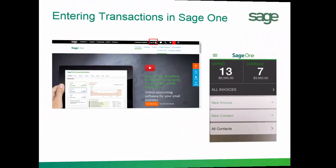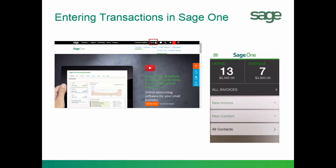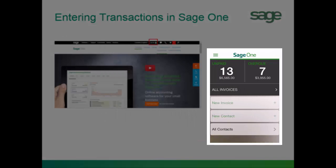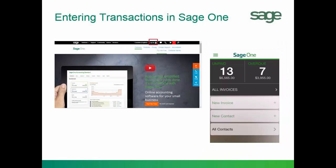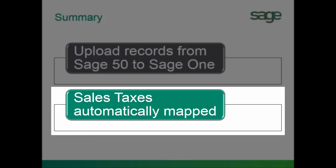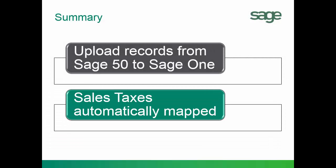We are now ready to start entering transactions in Sage 1, either from the website or using the mobile app. As you have seen, you can now upload records from Sage 50 to Sage 1, and the sales taxes are automatically mapped. The Sage 1 integration to Sage 50 allows you to do basic accounting tasks on any device with a web browser.